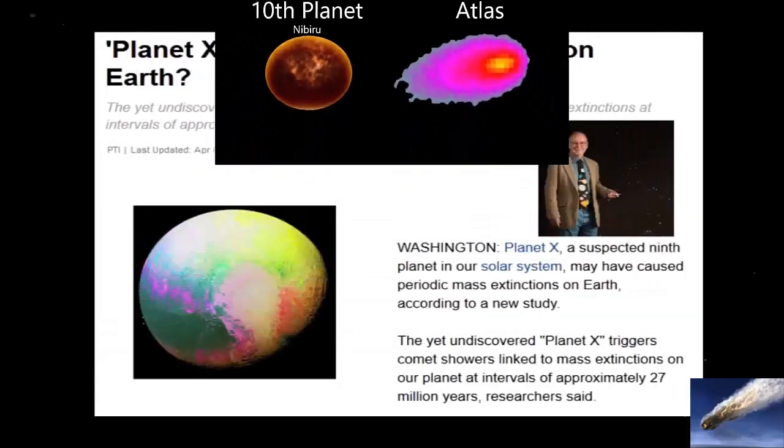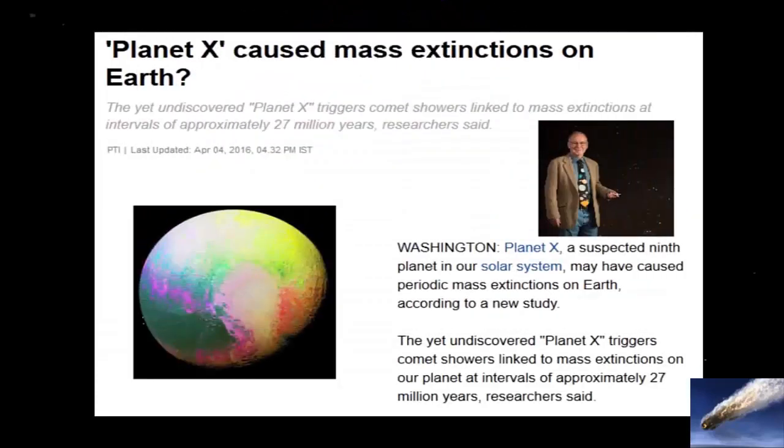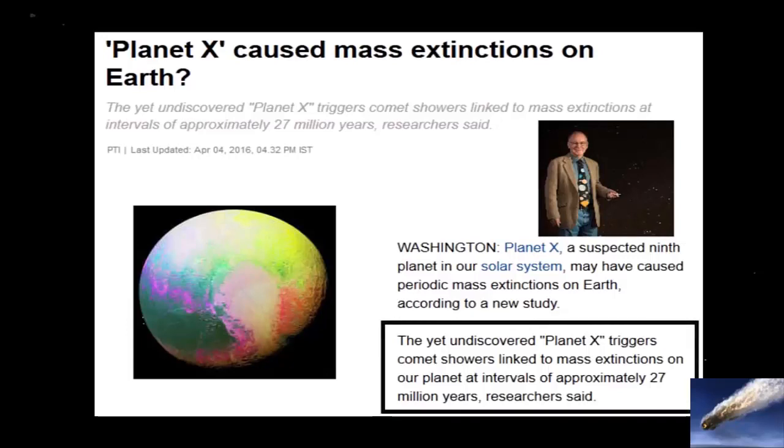Daniel Whitmire, a retired professor of astrophysics, has indicated in published articles with the Royal Astronomical Society that a yet undiscovered Planet X triggers comet showers that are linked to mass extinctions on Earth, ones that occur in intervals of 27 million years.